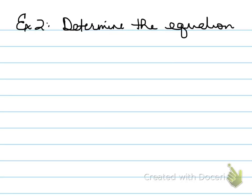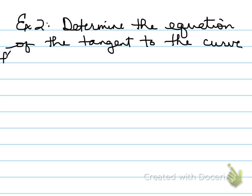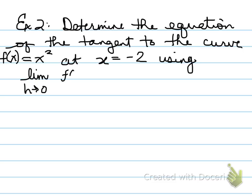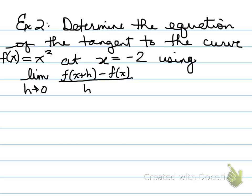All right, here we go, part two. Example number two: determine the equation of the tangent line to the curve f(x) = x² at x = negative two using the limit function. Now, some of you may learn this by plugging in at x = negative two right away, and that would be fine if it's one question. But if a question asks for different values — at x = negative two, at x = three, at x = five — your best bet is to find the general slope of the tangent line before plugging in the specific value for x.